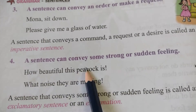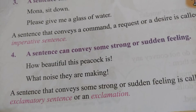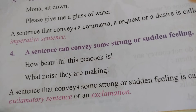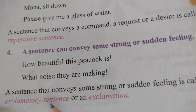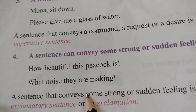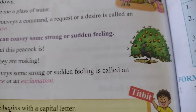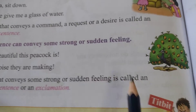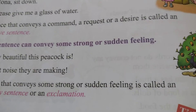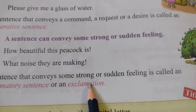The fourth one: a sentence can convey some strong or sudden feeling. When we see sudden things or when something happens suddenly in front of you, some feelings come out of our mind. Those are called exclamatory sentences. See how beautiful this peacock is — as soon as we see it, we say oh wow, what a beautiful peacock! Like this, when we express our sudden or strong feelings, these sentences are called an exclamatory sentence or an exclamation.